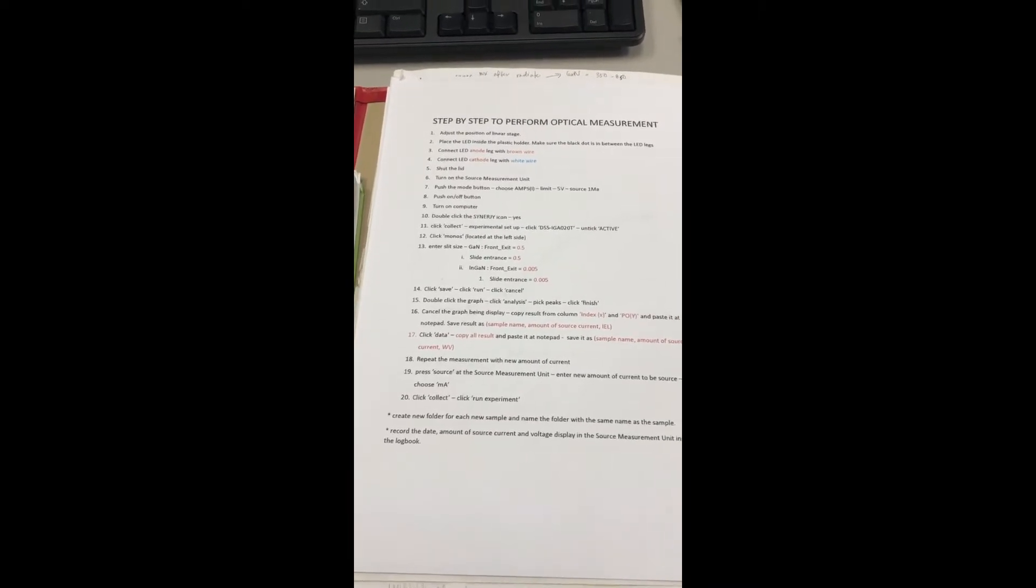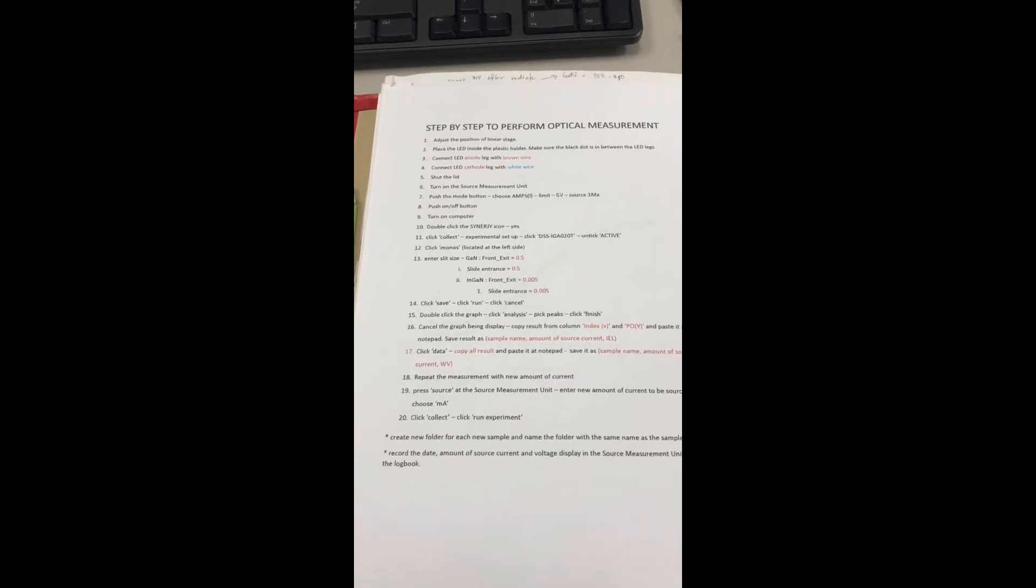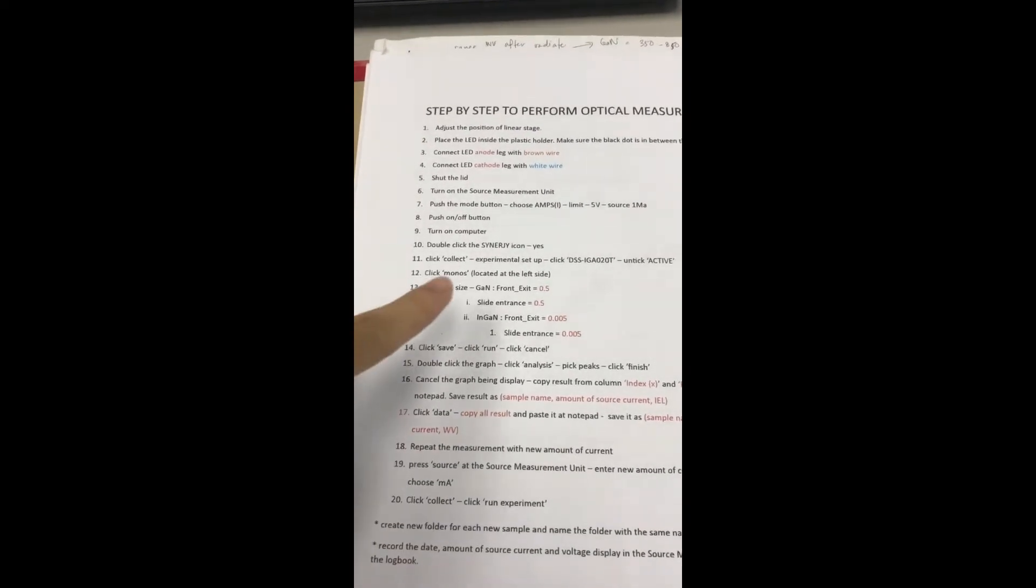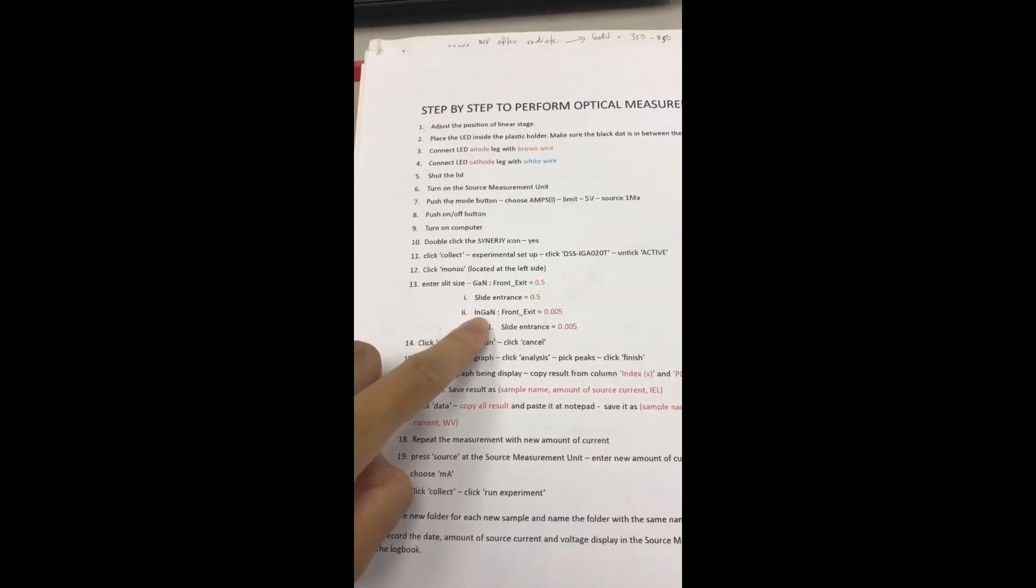Today we are going to perform the optical measurement for an in-gun LED. You need to make sure if you are using a gun, you need to set up the Horiba machine with 0.5 the slit, and in-gun is with 0.005.